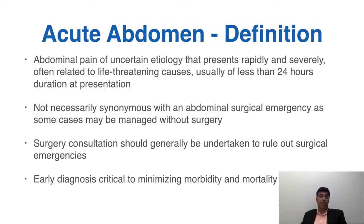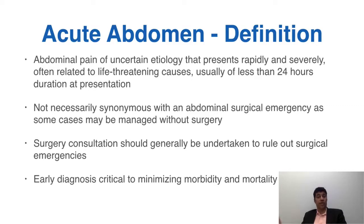Not every condition in the differential diagnosis for acute abdomen requires surgery. There are certainly conditions that don't necessarily require surgical intervention. However, it's generally a good idea to involve general surgeons and sometimes other surgical specialties early in the evaluation to rule out surgical emergencies and reduce morbidity and mortality. The earlier a diagnosis is made — of something like appendicitis, acute cholecystitis, or pelvic inflammatory disease — the earlier physicians and nurses can intervene and potentially avoid life-threatening or debilitating complications.